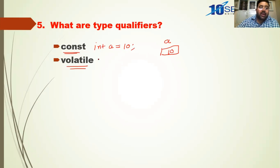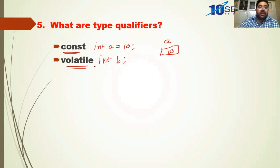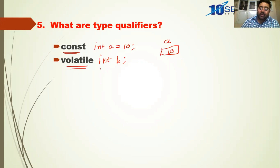The const qualifier should be used along with a data type and when you initialize. The value 10 cannot be modified in the program. For volatile — for example, volatile int b — if you declare a variable with the keyword volatile, it acts as a warning message to the compiler that if a register is available, don't store b in the register; store it in RAM, in primary memory.